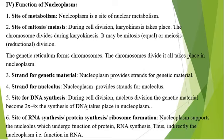After division in mitosis, parent cells form two daughter cells, and in meiosis parent cells form four daughter cells. The nucleoplasm also supports the sites of RNA synthesis, protein synthesis, and ribosome formation. The nucleoplasm supports the nucleolus, which undergoes protein and RNA synthesis. Thus, indirectly, the nucleoplasm functions in RNA and protein synthesis as well.